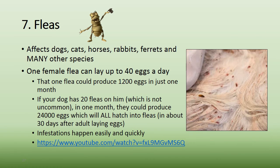Fleas affect dogs, cats, horses, rabbits, ferrets, and many other species. Humans may be bitten but are not a preferred host. One female flea can lay up to 40 eggs a day. If a dog has 20 fleas, they could produce 24,000 eggs in one month, all hatching into fleas within about 30 days. Infestations can escalate very quickly. Fleas are not only a nuisance but can also cause flea allergy dermatitis.